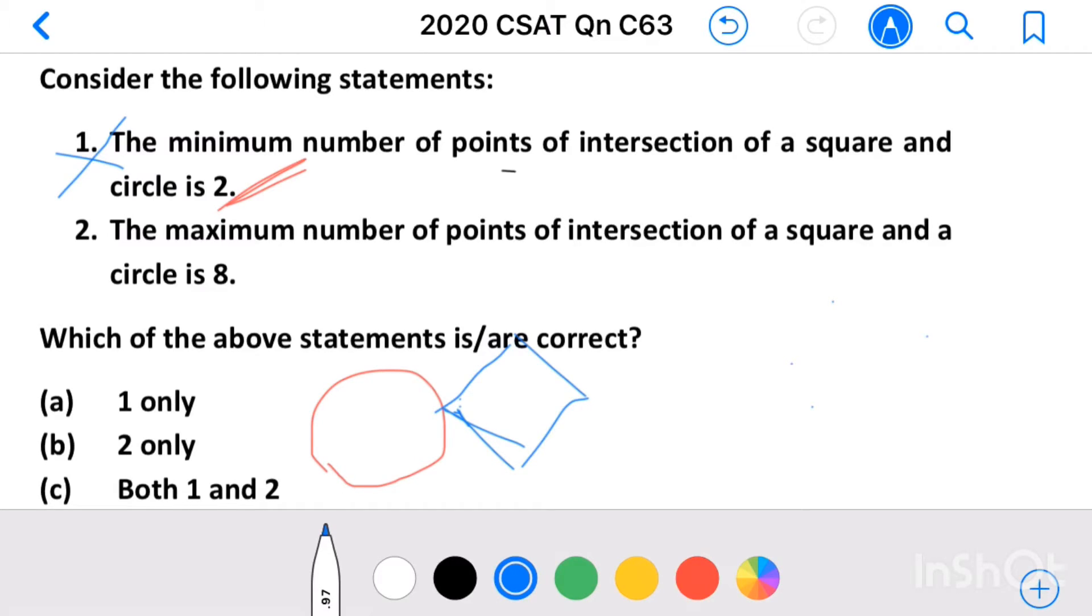Now see the second statement. The maximum number of points of intersection of a square and a circle is 8. Here I draw a circle, then a square.